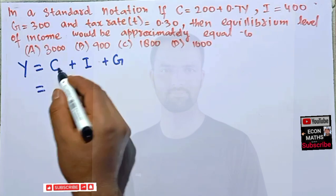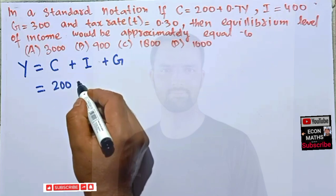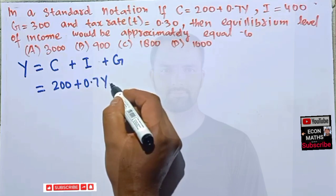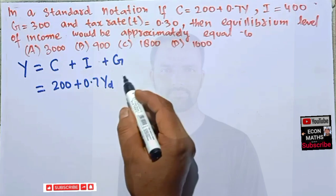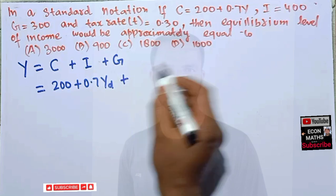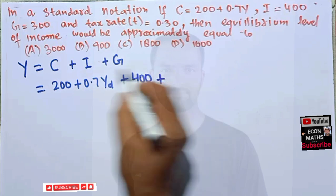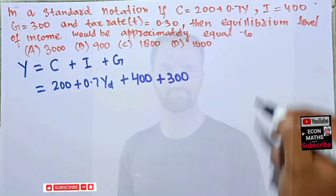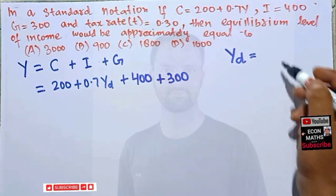Now just giving the values here, we have our consumption function is given as 200 plus 0.7 YD. It is actually disposable income here. Then we have this investment function in place of I we have 400 plus G is 300.